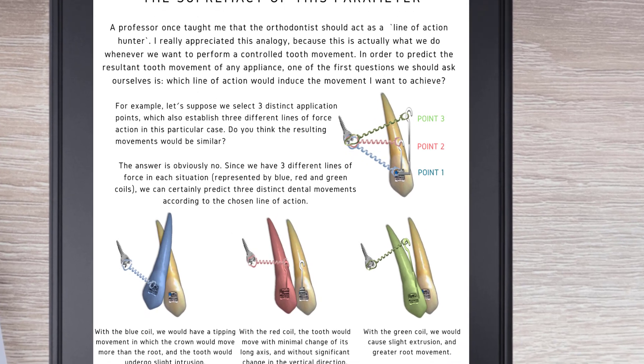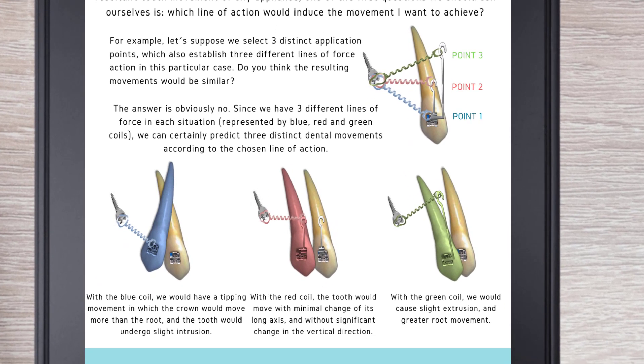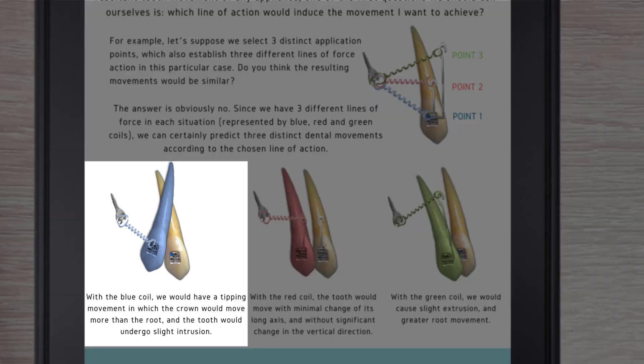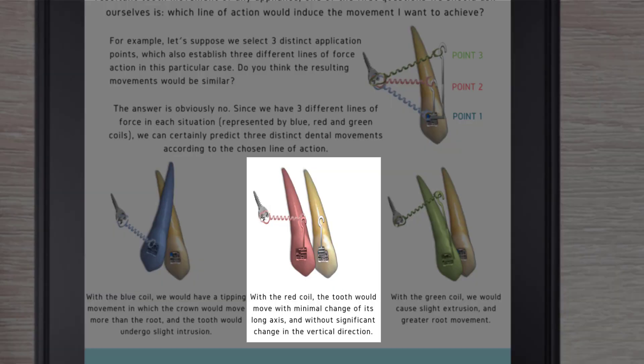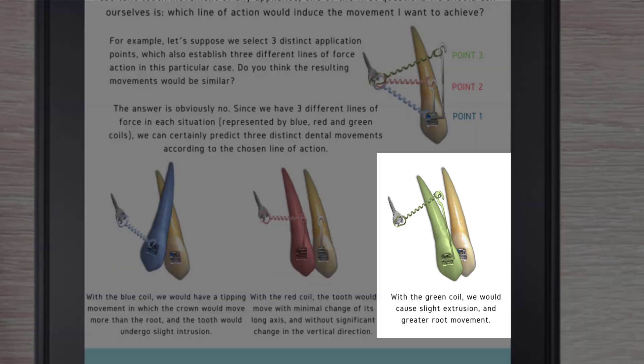With the blue coil, we would have a tipping movement in which the crown would move more than the root, and the tooth would undergo slight intrusion. With the red coil, the tooth would move with minimal change of its long axis, and without significant change in the vertical direction. With the green coil, we would cause slight extrusion and greater root movement.